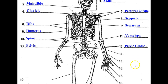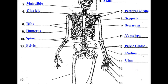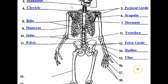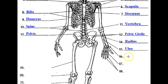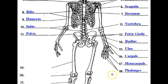Moving to the lower arm bones: on your thumb side is the radius, and on your pinky side is the ulna. The bones of the hand include the carpals, which are in your wrist; the metacarpals, which are the first set of bones leading up to your fingers; and the phalanges, which are the fingers themselves.